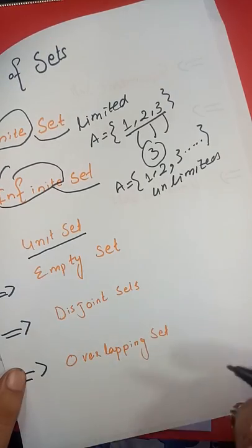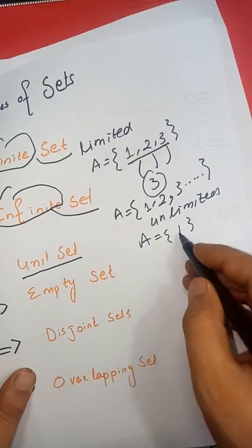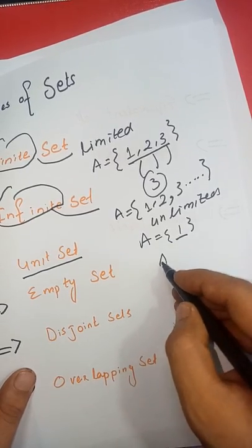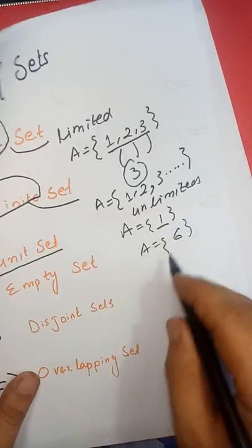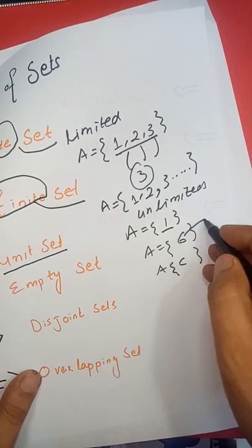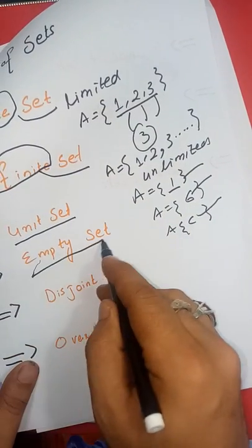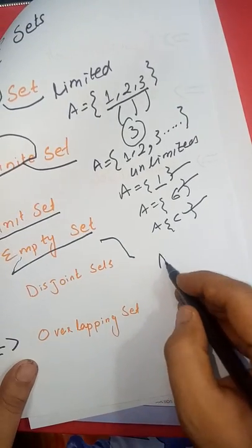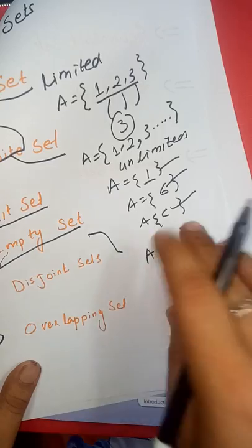That shows it continues, which means unlimited. Unlimited means infinite set. Unit set means the set has only one element. Just one element, that's it. One element only.